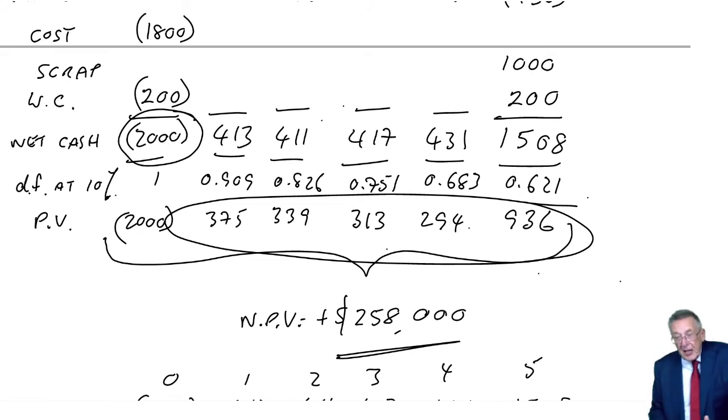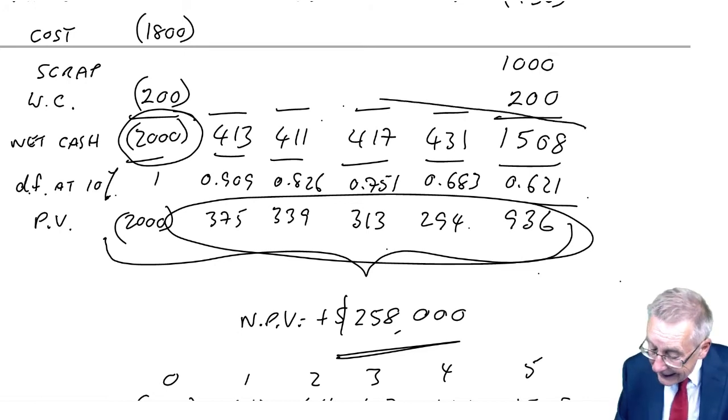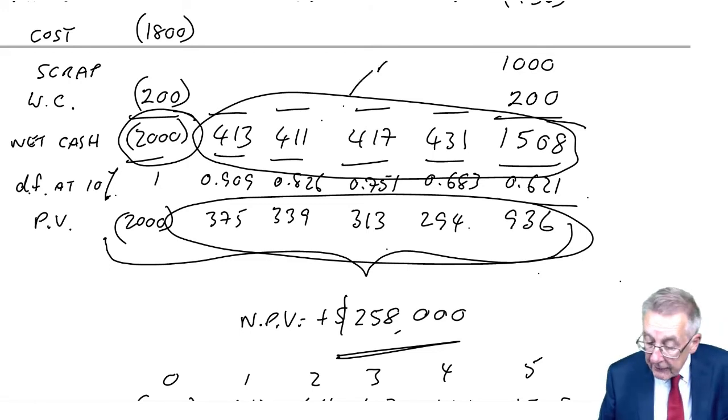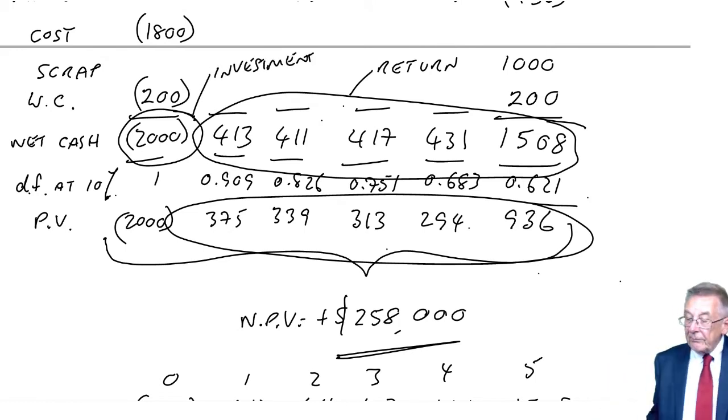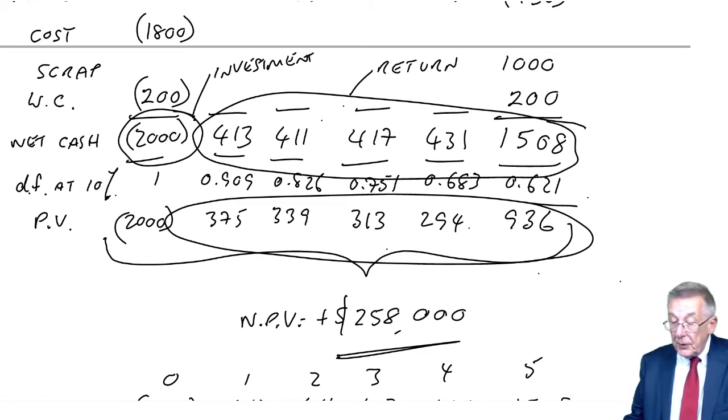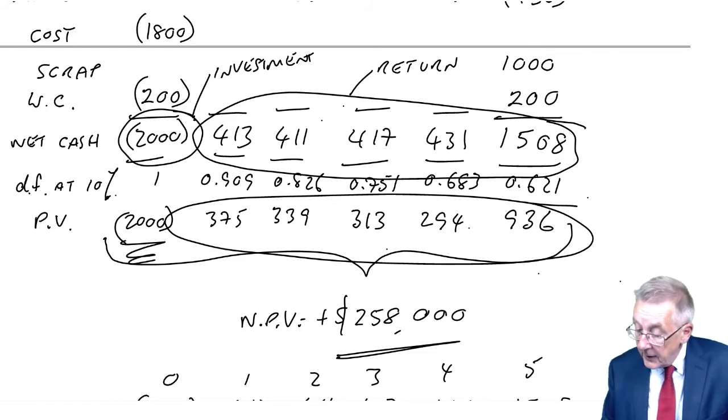The outflows at the beginning are the investment phase. And then it gave us inflows. This is the return phase. And so doing it on example 1, the investment phase was that 2000. There could have been investments, an outflow in year 0 and time 1. But here, it's just the 2000, and the present value is 2000.